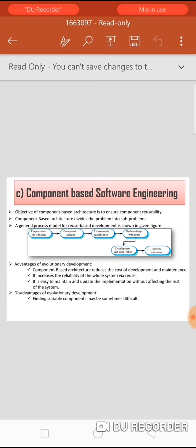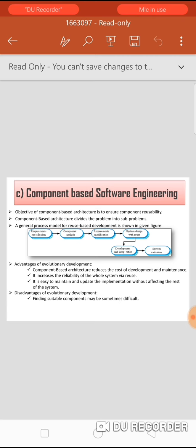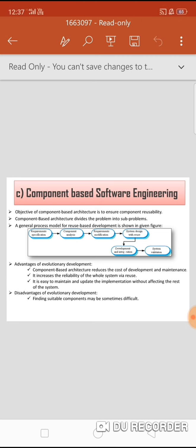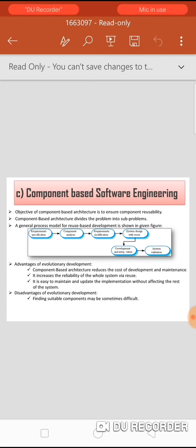Next is requirement modification: requirements are analyzed using information about discovered components and modified to reflect available components. Where modifications are impossible, component analysis may be re-entered for alternative solutions. Next is system design with reuse: the framework of the system is designed or an existing framework is reused, with designers organizing the framework to accommodate reused components. Next is development and integration: software that cannot be externally sourced and component systems are integrated to create the new system.